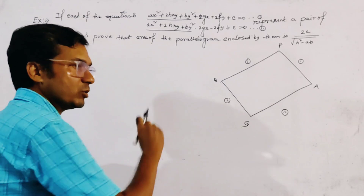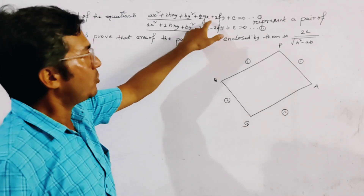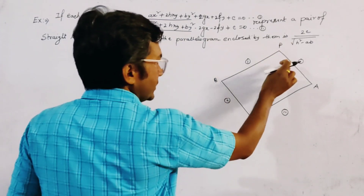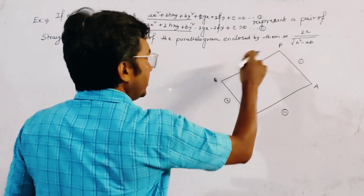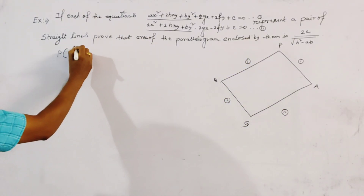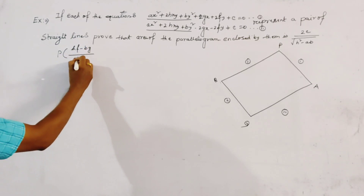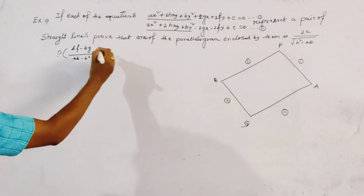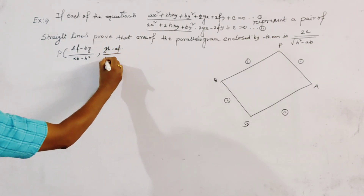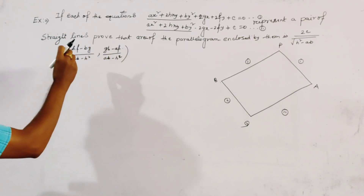We first find the point of intersection of the first pair of lines and the point of intersection of the second pair of lines. The point of intersection of line 1 (PA and PB) is given by P = (hf - bg)/(ab - h²), (gh - af)/(ab - h²).